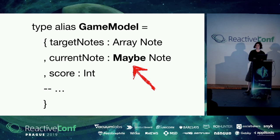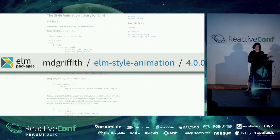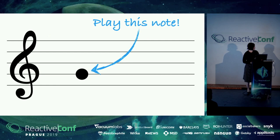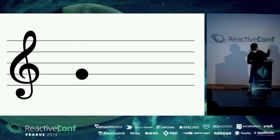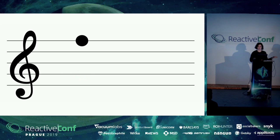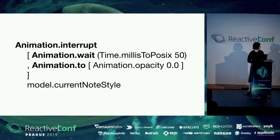I initially used an ELM-style animation library. It was great for UI animations — it helped make things feel more organic with notes fading in and out. The idea for the first version of the game is: if you play the wrong note, it shows up in red; once you play the correct note, it fades into green and gives you another one. The code uses a nice declarative syntax where I say, like, this many milliseconds to fade in, go from opacity 100% down to zero.